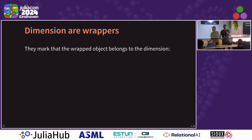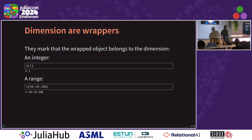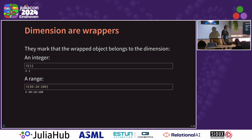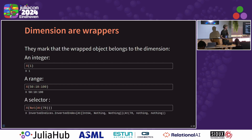So dimensions — it's just a wrapper type. It's a very simple thing. It's one struct that wraps something else. And this act of wrapping something tells us what dimension we mean this thing is from or related to. And that can really be anything. It can be an integer, so we can say the first item on the X dimension. It can be a range — this may be the lookup along a dimension. It can be a selector. Here we're seeing things on X not at 70. But really, this can wrap anything, so it's kind of extensible to be used to relate actions to dimensions.